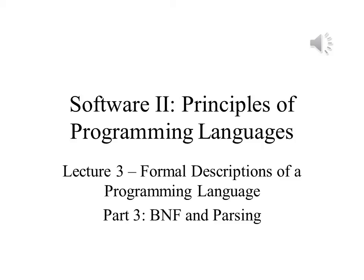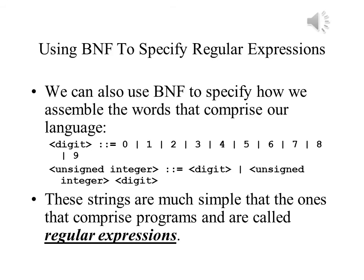In Part 3 of Lecture 3, we will discuss Backus-Naur Form and parsing. BNF allows us to create classes of characters. In this way, I can tell that 0 through 9 are all digits, and I can use the word 'digit' to represent the possibility of any digit appearing here. I can do the same thing for 'letter', to signify any letter from A to Z, uppercase or lowercase. This simplifies the job of specifying which strings are legal and which are not.